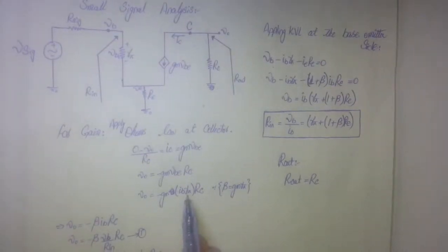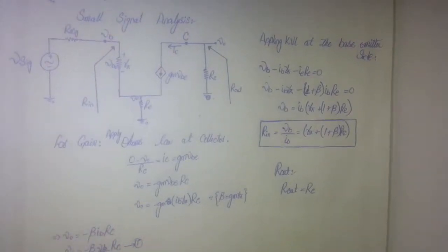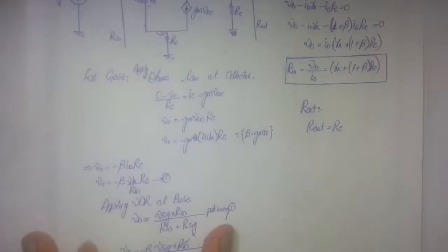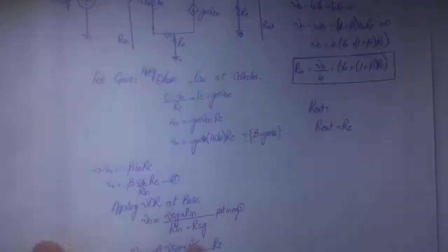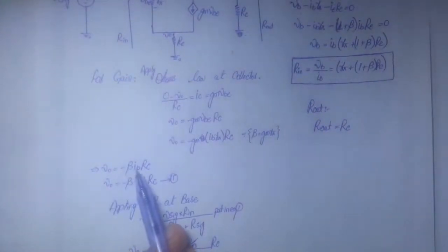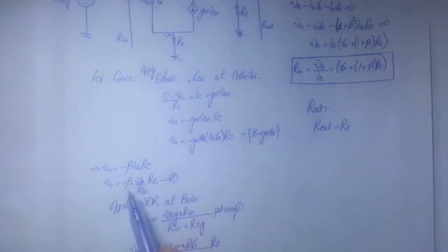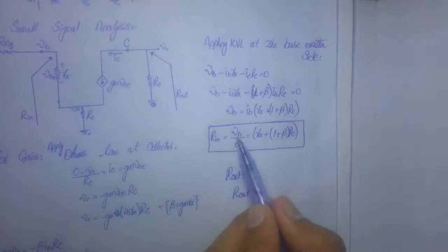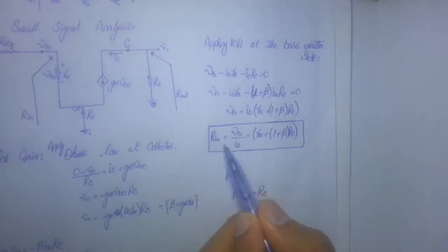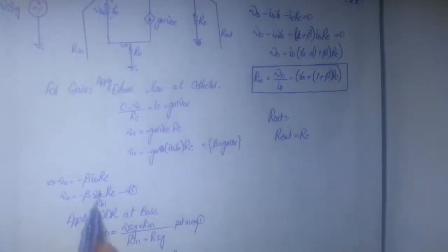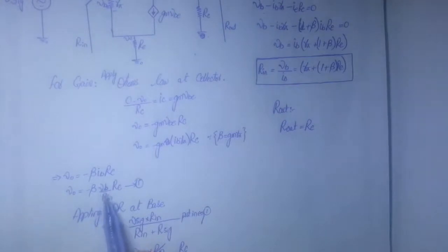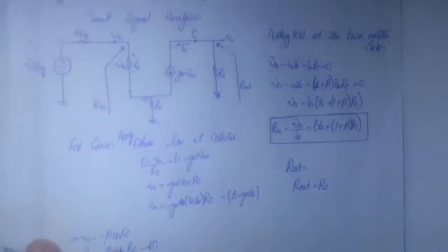To find the ratio Vout by V-signal, substitute this value. Since gm·Rπ equals β, we get: Vout = −β·IB·RC. Now IB equals VB divided by RN — this is equation number one. We need to find VB to complete this ratio.